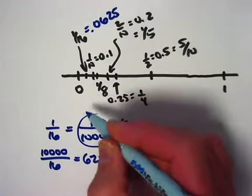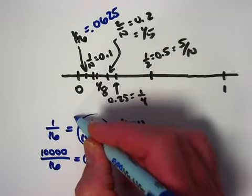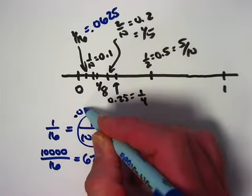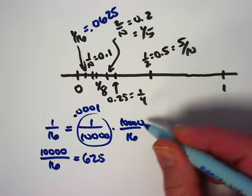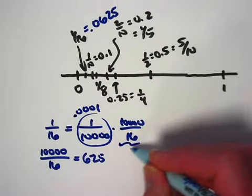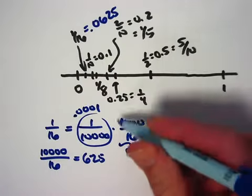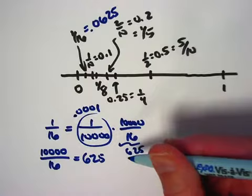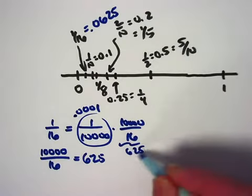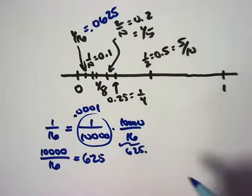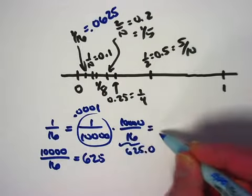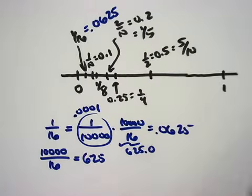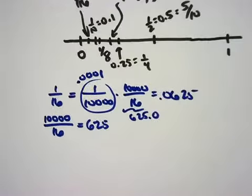Where this is one ten-thousandth, 0.0001, and this is 625. That means what we do is we move the decimal place on the 625 to the left, excuse me, four places. Thinking of 625 as 625.0, move it to the left four places to ultimately get this product to be 0.0625. That is the basis for the long division method.